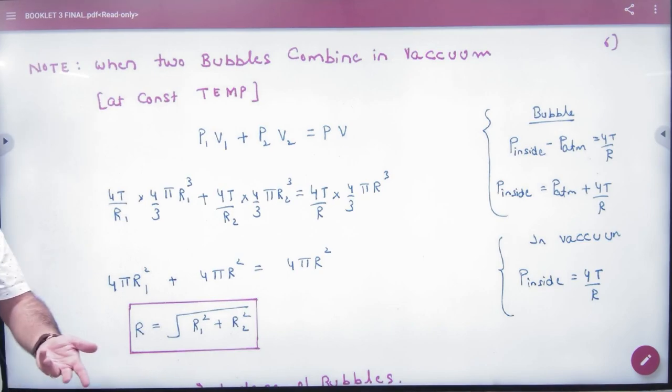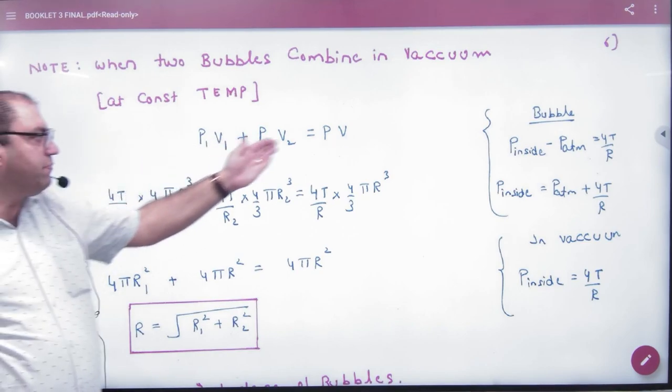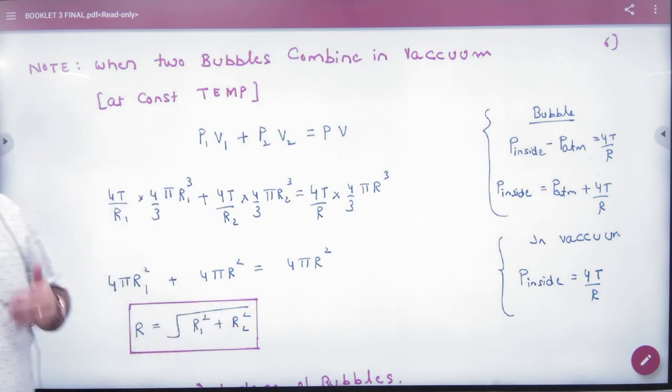they will be mixed together. Then P1V1, P2V2, equals P into V. Where is this combined in the question? In this question, it is given in vacuum.